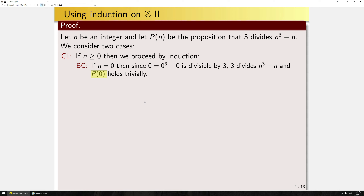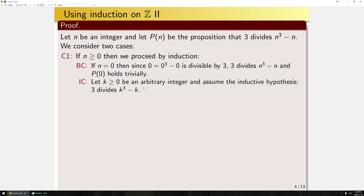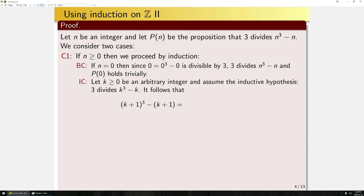For the inductive step, let K≥0 be an arbitrary integer and assume the inductive hypothesis that 3 divides K cubed minus K. We want to show P(K) implies P(K+1), i.e., that 3 divides (K+1) cubed minus (K+1). Let's examine what P(K+1) looks like by substituting K+1 into the expression and expanding it out. The goal is to use the fact that K cubed minus K equals 3 times some integer to show the new expression is also divisible by 3.